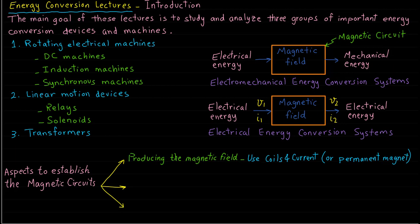The second aspect is the magnetic field medium. In all the above-mentioned machines and devices, magnetic materials represent a major part of these machines and are used as a medium to obtain high magnetic field density. That means for the same amount of current used to produce the magnetic field, magnetic materials will have higher magnetic field density when compared with other materials. When we say we have high magnetic field density, it means we can get high machine output per unit machine volume.